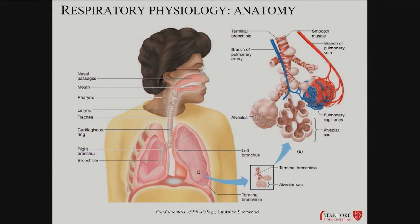You've got the trachea, the main inflow pathway. Right and left main stem bronchi, and then those go into bronchioles, which further branch until they become terminal bronchioles. And ultimately they end in a sac — an alveolar sac — which is an outpouching of the terminal bronchiole. Each of those alveolar sacs or alveoli is very heavily invested with capillaries, of course. So that's where gas exchange is happening.